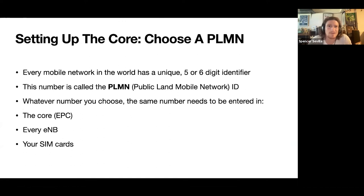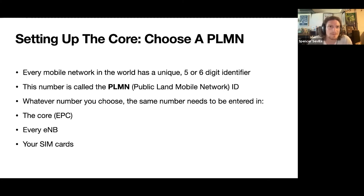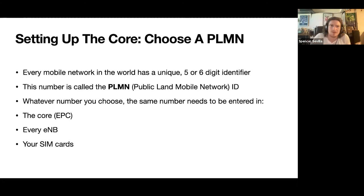The first is a number called a PLMN. It's either five or six digits, and every mobile network in the world has a unique one. The idea is this is how you figure out roaming — your phone checks whether it's talking to a Verizon tower or a T-Mobile tower. That's how these things work in cellular land.